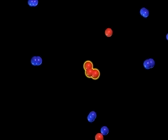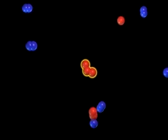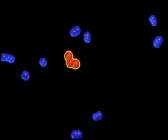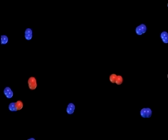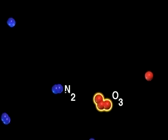The O3 molecule that is formed has excess energy, the energy released when the oxygen atom combines with the oxygen molecule. If it does not get rid of that excess energy, it rapidly dissociates back into O2 and O.